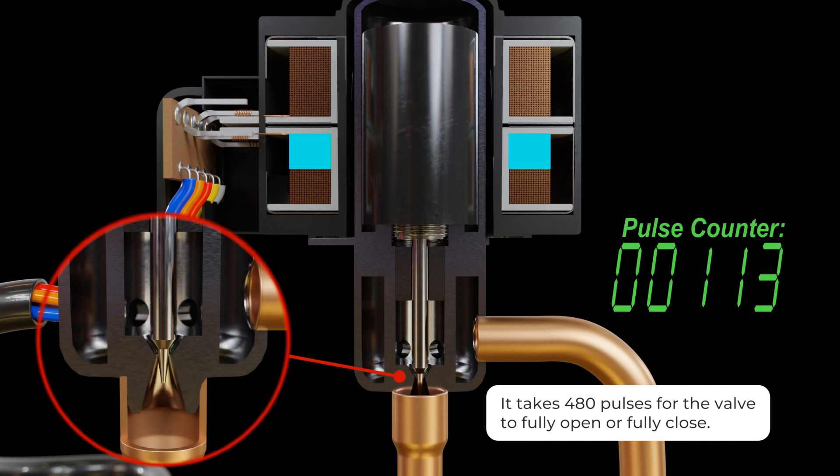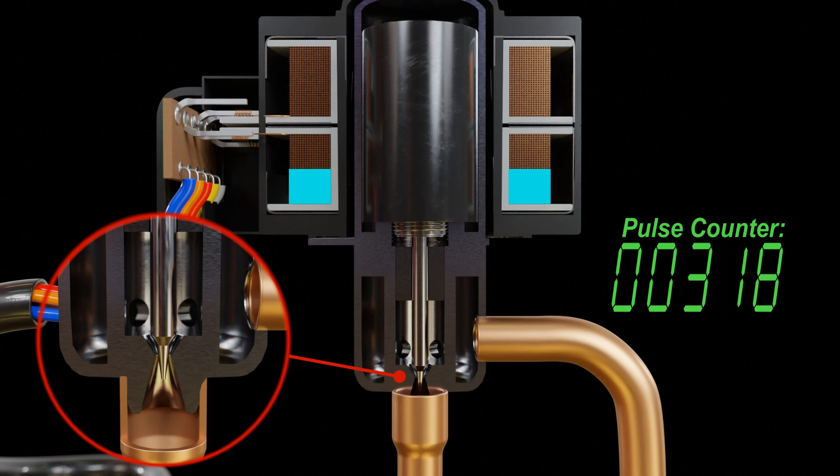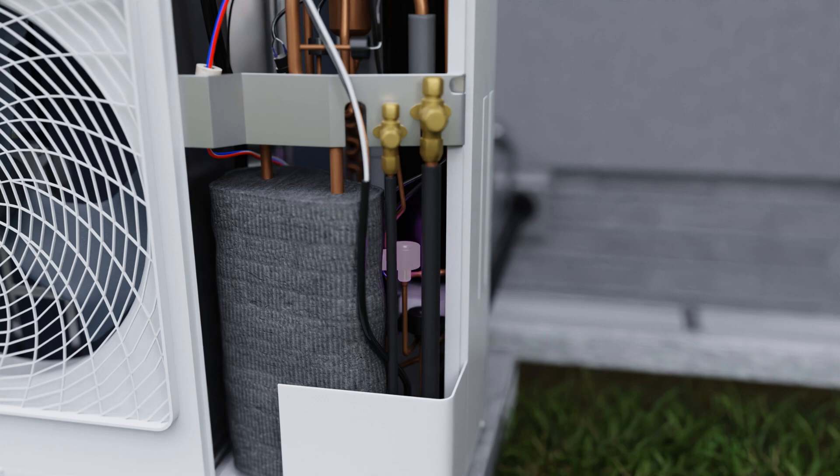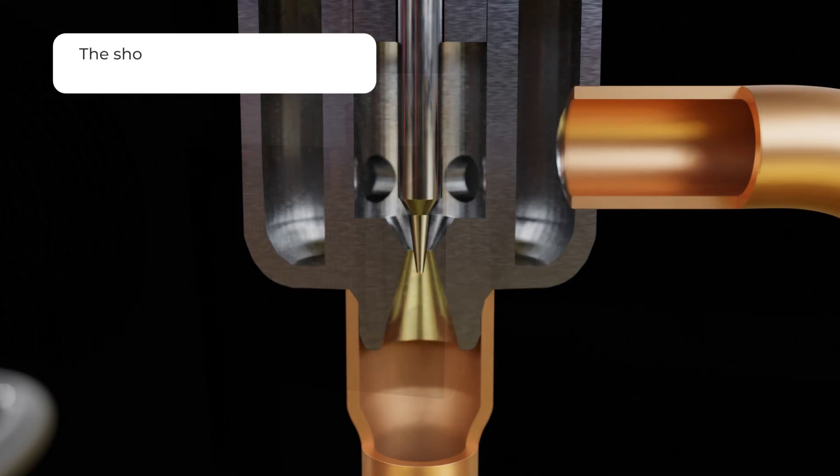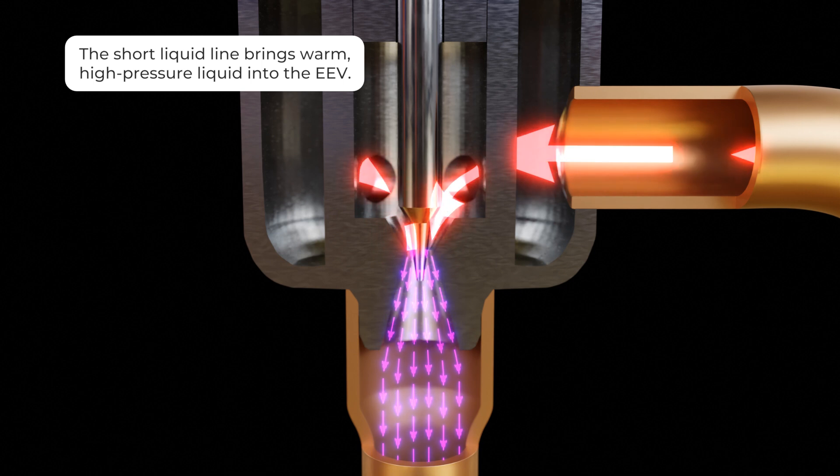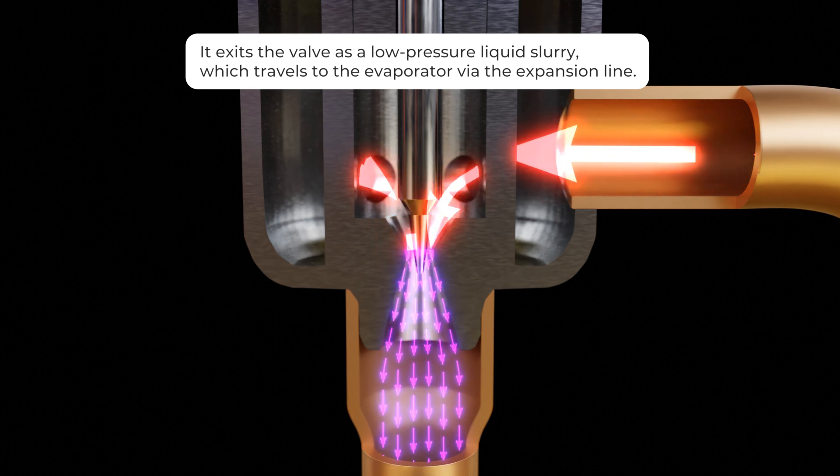It takes 480 pulses for the valve to fully open or fully close. You'll often see these at the outdoor unit in mini splits and also VRF equipment. The short liquid line brings warm high pressure liquid into the EEV and it exits the valve as a low pressure liquid slurry which travels to the evaporator via the expansion line.